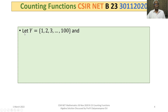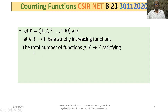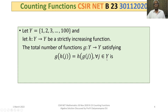The problem is: let Y be the set consisting of 1, 2, 3, up to 100, and let h be a strictly increasing function from Y to Y. Then count the total number of functions g from Y to Y satisfying g(h(j)) = h(g(j)) for all j belonging to Y.